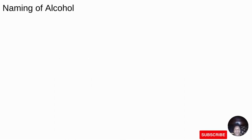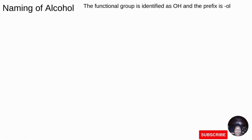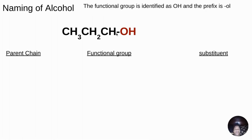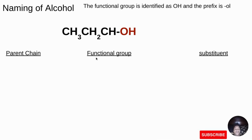Let's start with naming of alcohol. Alcohol can be identified by the OH group. The suffix we call it 'ol'. Now, in identification of a compound, we have to look for three things: the parent chain, the functional group, and the substituent. Remember, the parent chain is the longest chain or the chain with the highest number of carbons, while the functional group gives specific names describing chemical reactivity. The substituent is any element or compound not part of the parent chain.